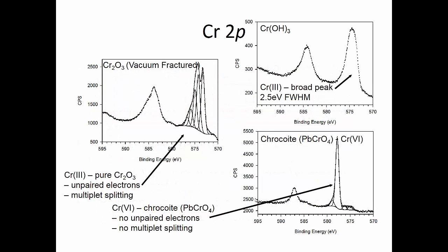Looking at the standard spectra from the various chromium compounds: for pure chromium oxide (Cr₂O₃, chromium 3+ oxide), we have the multiple split structure that can be fit with five peaks. For chromium hydroxide or hydrated chromium oxide, we get a broad peak with a full width at half maximum of about 2.5 eV, which can be fit with one single peak. For chromium 6+ species, which don't show multiple splitting because they have no unpaired electrons, we get a very well-defined sharp single peak.